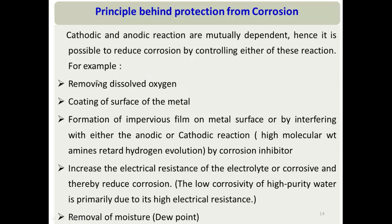We can also reduce corrosion by removing components from the cathodic reaction. If we remove dissolved oxygen in neutral medium, the corrosion rate drops dramatically. In acidic medium, removing oxygen also greatly reduces corrosion rate. If none of these approaches are feasible, we can coat the metal with paint or another material to prevent ions from reaching the surface.